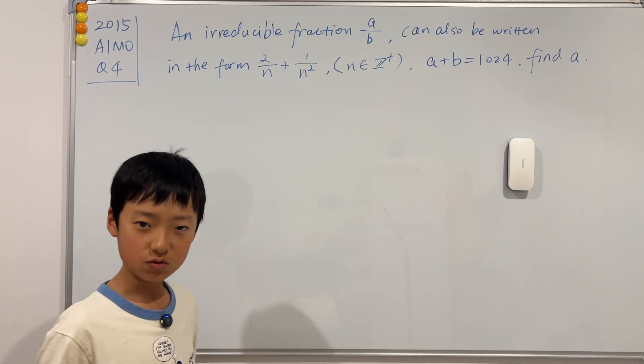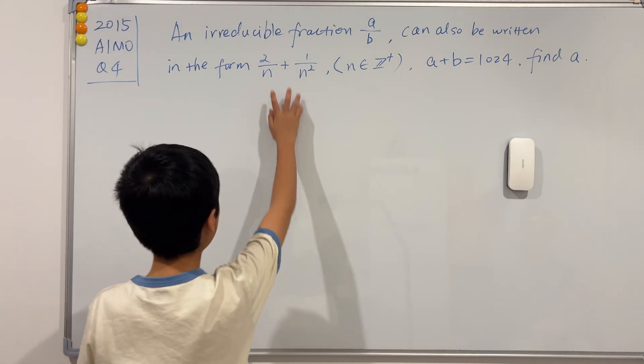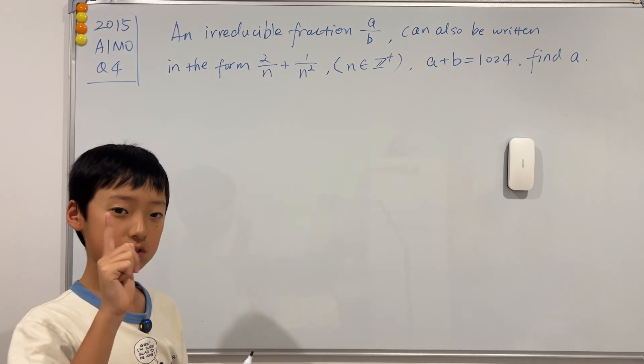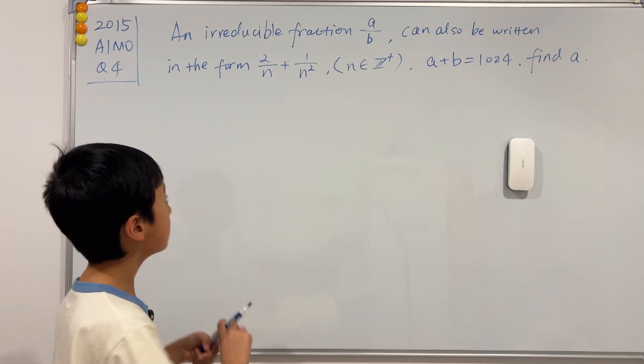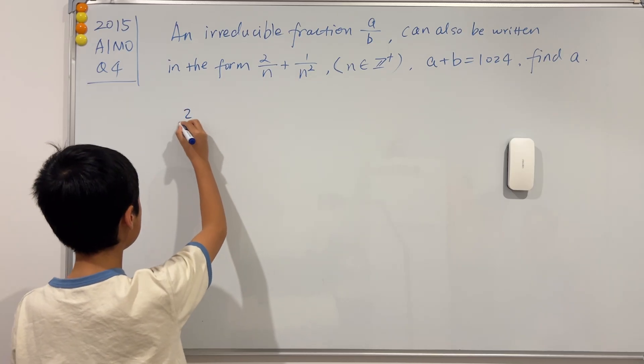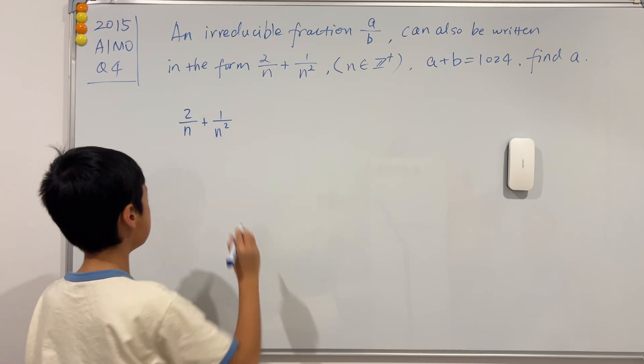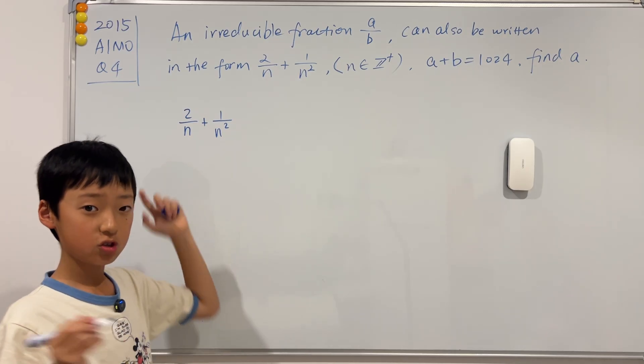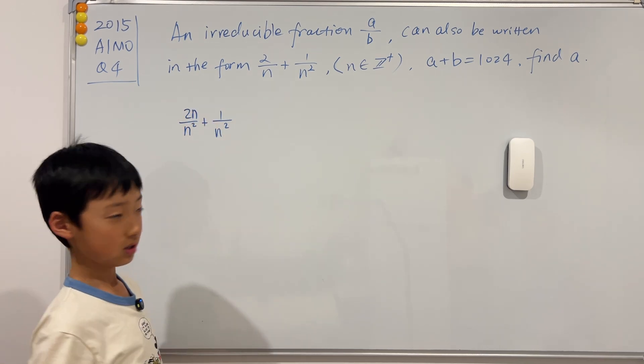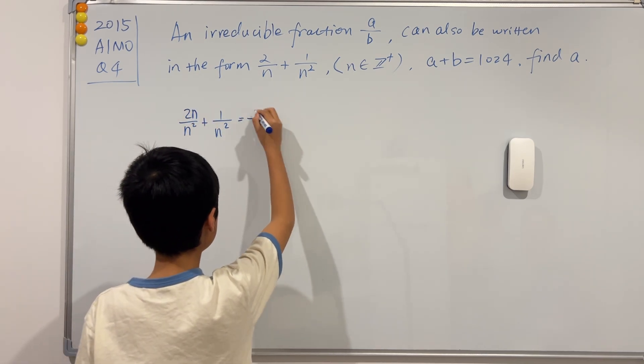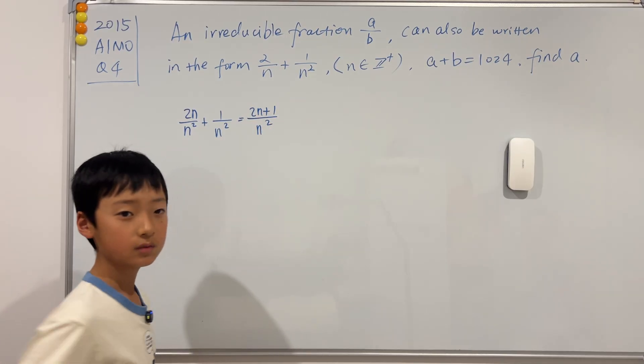So how do we do that? The first thing I'm going to do is combine these two fractions to make it one single fraction, so that it is easier to compare with A over B. You can easily see that 2 over N plus 1 over N squared is just... if you multiply this fraction, top and bottom, by N, this becomes N squared, and this becomes 2N. So this is just equal to 2N plus 1 over N squared.